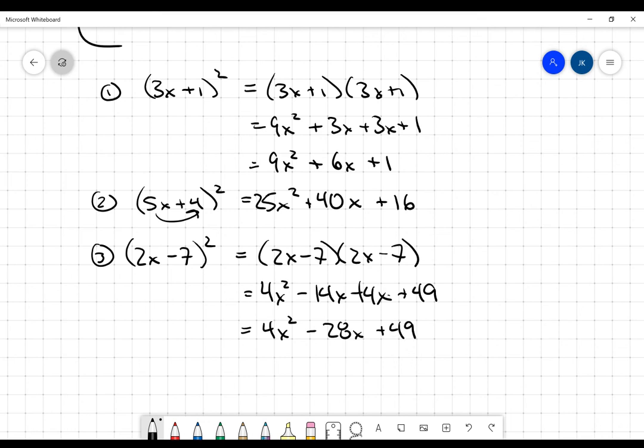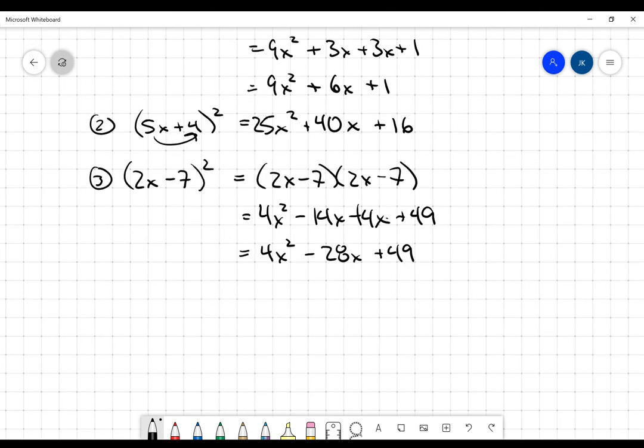Again, that middle term is double the product of the two terms in the binomial. I can take a shortcut now. Let's make this X minus 5 squared. This becomes X squared, the last term is plus 25, and the middle term is double the product: X times negative 5 is negative 5, times 2 is negative 10X. And that's how you would square binomials.